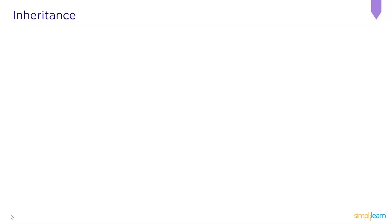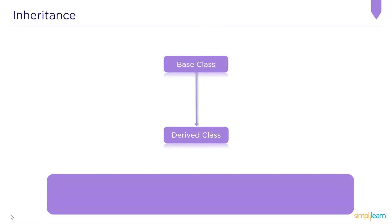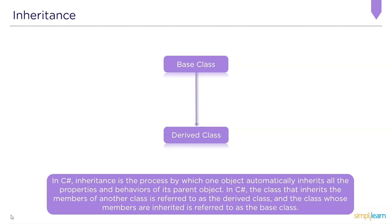The next topic in object-oriented programming in C# is inheritance. Inheritance is a crucial concept where parent and child classes are defined. The child class inherits the parent class's methods and properties but can also change the behavior of those methods if necessary. If required, the child class can also define its own methods.